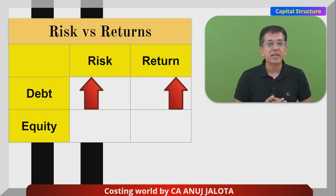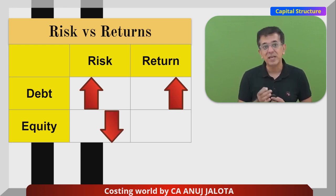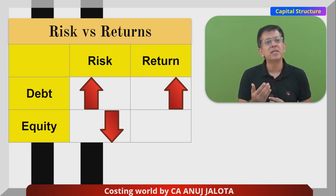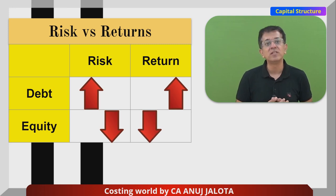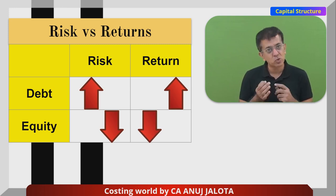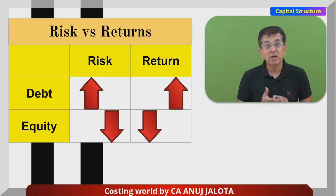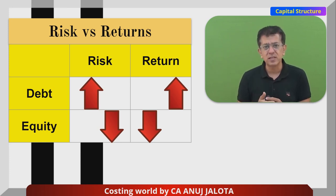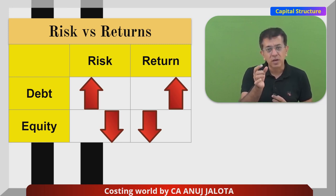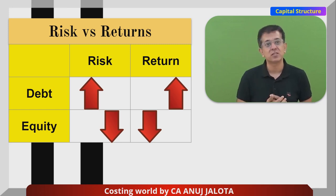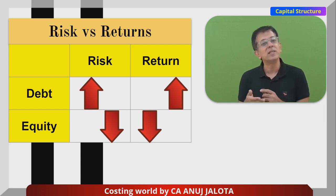Now let's move to equity. If a company issues equity shares, its risk is going to be quite less, because there is no fixed commitment to pay — even if the company has profit, it might not pay dividends. But lower risk will always lead to lower returns. Why? Because the cost of equity is highest, as equity shareholders have taken the highest risk and are supposed to get the highest return. So from EBIT, if you remove the cost of equity, whatever is left will always be least — therefore, least risk leads to least returns.